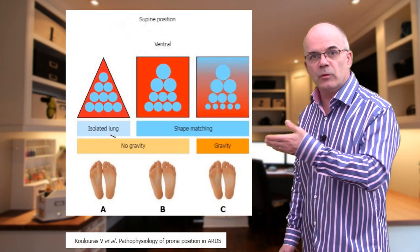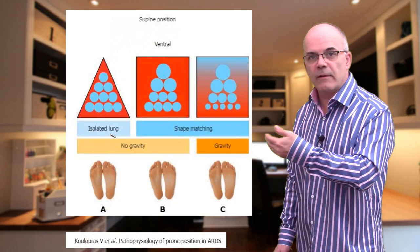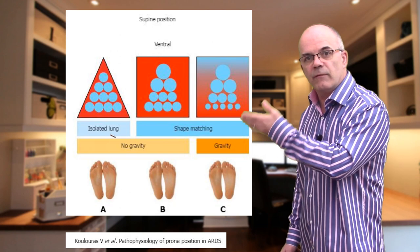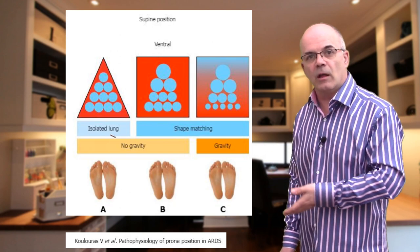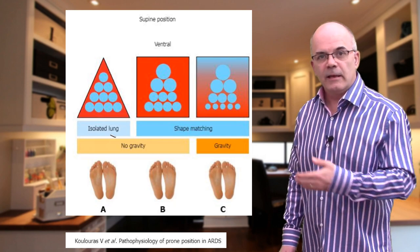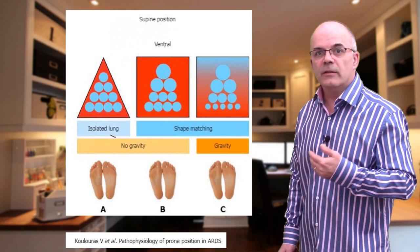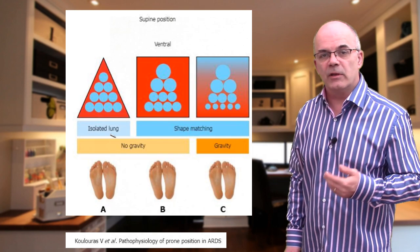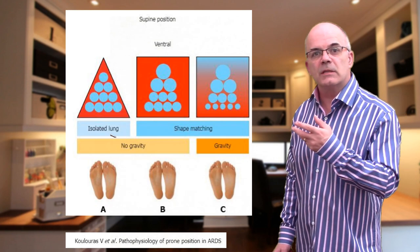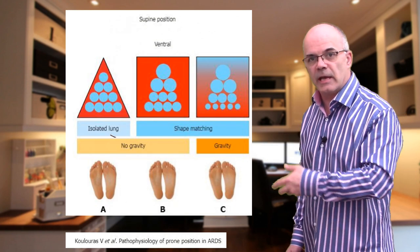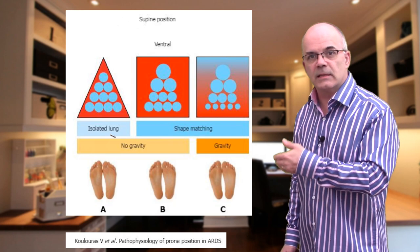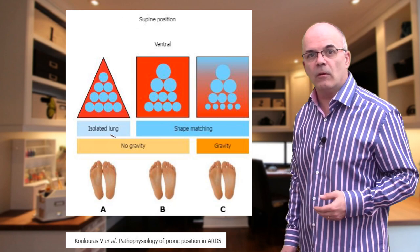In the first diagram, when gravity is not added in, with the shape matching the ventral alveoli are bigger than those on the dorsal aspect. If we then add gravity, the dependent alveoli close and the pulmonary blood flow is diverted to this area, so we are perfusing the less well-ventilated alveoli.